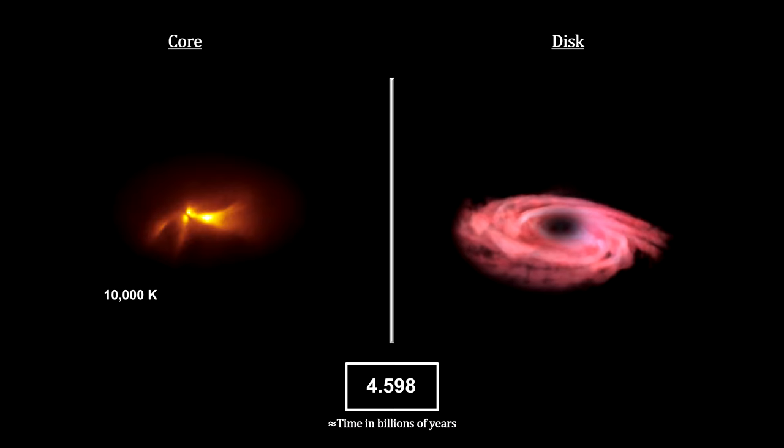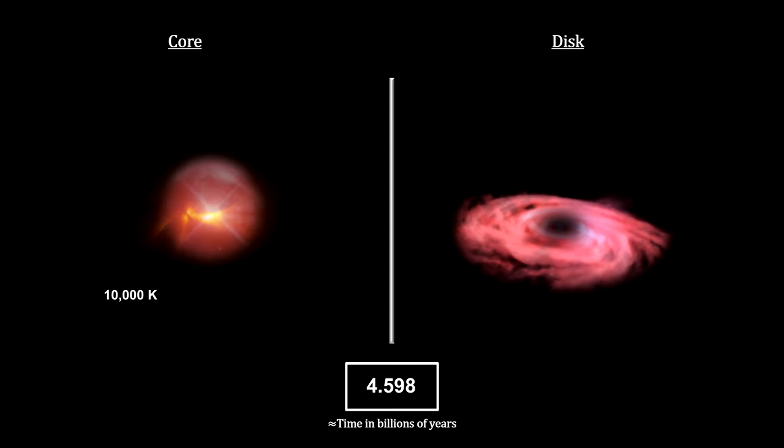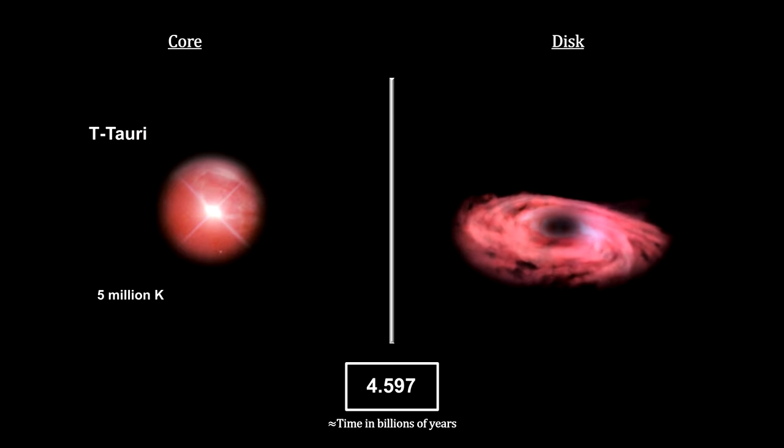The protostar phase does not last long for stars the size of our Sun. Over the next million years, it accumulated massive amounts of matter from the disk and shrank significantly as gravity took hold. Its core temperature rose to 5 million degrees. This put the Sun into its T-Tauri phase, named after the star T-Tauri.